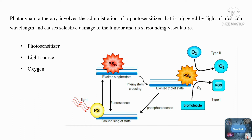The phenomenon of triplet-triplet annihilation is used in type 2 reactions. The photosensitizer in its excited triplet state reacts with oxygen in its triplet ground state, producing highly reactive singlet oxygen. The reactivity of ROS and singlet oxygen is high, and their half-life is short. As a result, only biological substrates within a 20 nanometer radius of the region where these species are formed are directly affected by photodynamic therapy.